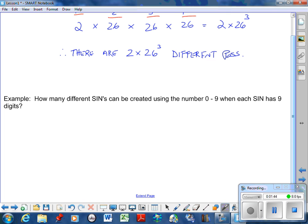How many different social insurance numbers can be created using the numbers 0 to 9, when each one has 9 digits? So 1, 2, 3, 4, 5, 6, 7, 8, 9. For each of those digits, how many options do we have? There is no restriction other than 0 through 9, so that means that there's 10 possibilities for each option.